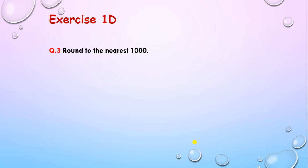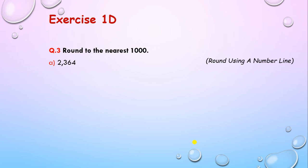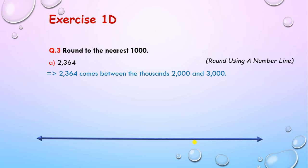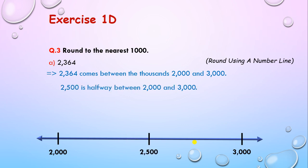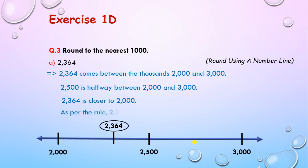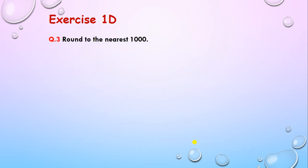Let's solve question 3: round to the nearest 1000. The example is 2364. We will solve this using a number line. Let's draw a number line — the number comes between 2000 and 3000. The halfway number is 2500. Placing 2364 on the number line, we can observe it is closer to 2000. Therefore, 2364 is rounded to 2000. The answer is 2000.